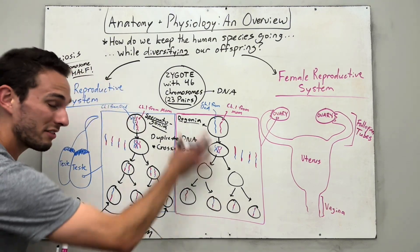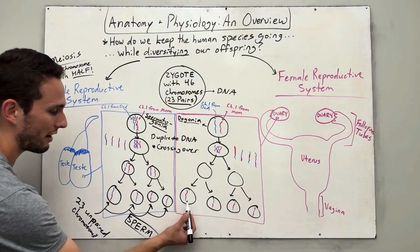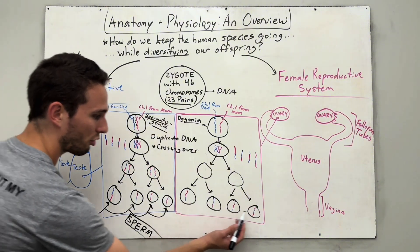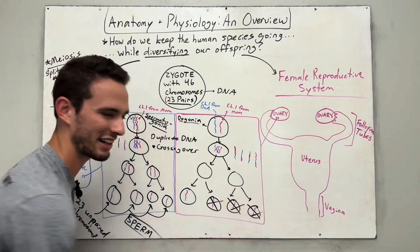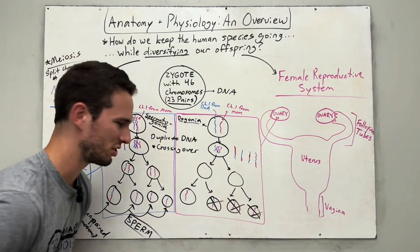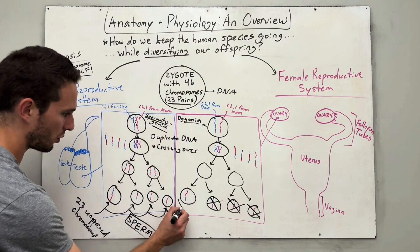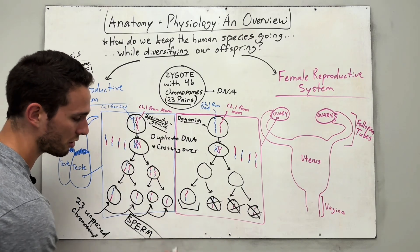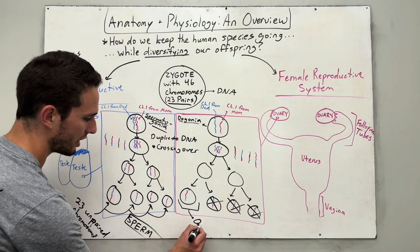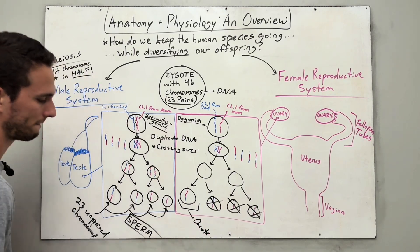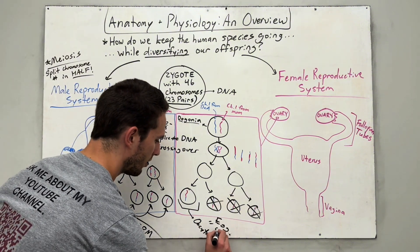In the female's case, it works the same way — we've diversified our chromosomes — but only one of these four will be selected. The female is a little more choosy. This one has 23 unpaired chromosomes and will turn into the oocyte, which is basically the mature egg cell.